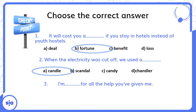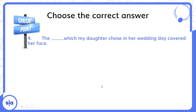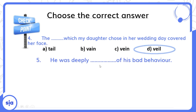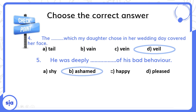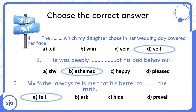Number three: I'm blank for all the help you have given me — I'm grateful, أنا ممتن. Number five: He was deeply blank of his bad behavior — he was ashamed، كان خجلان. Number six: My father always tells me that it's better to blank the truth — tell the truth.